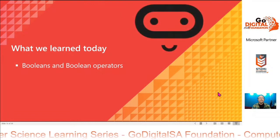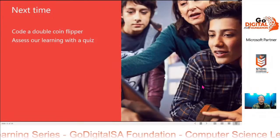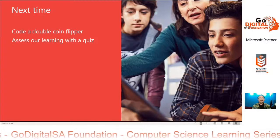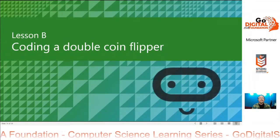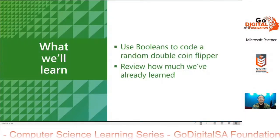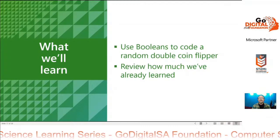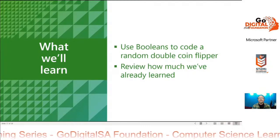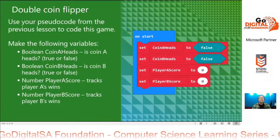So what we learned: Booleans and Boolean operators. Now we're going to code a double coin flipper, and then we'll look at a quiz. Lesson B is coding a double coin flipper. We'll use Booleans to code a random double coin flipper, and then we'll review what we've learned.